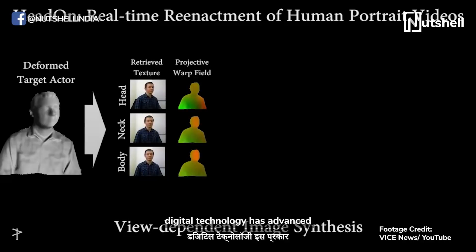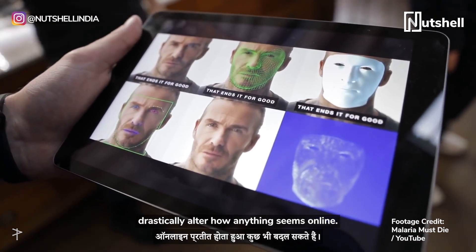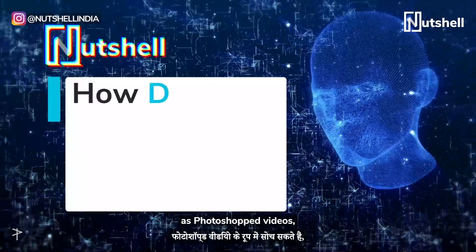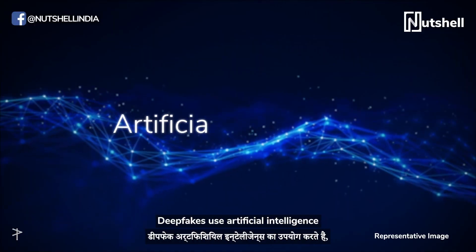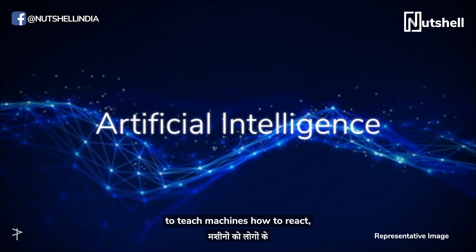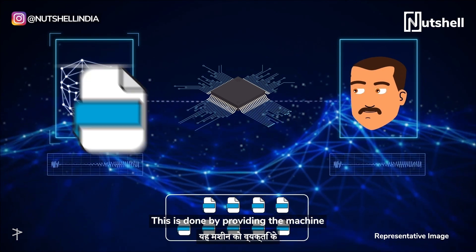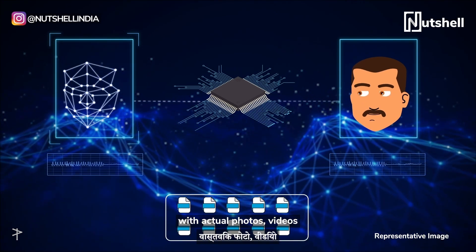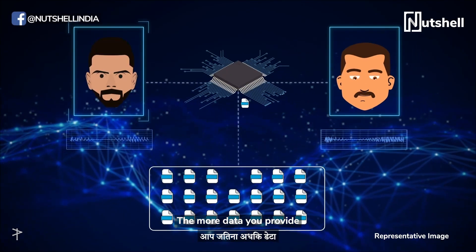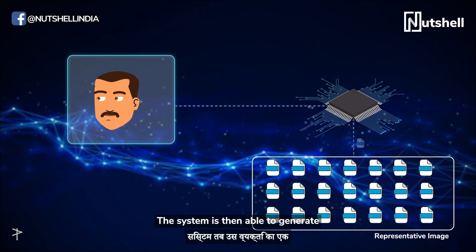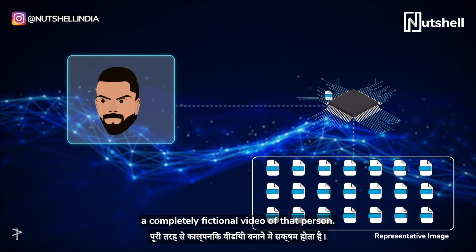In the last few years, digital technology has advanced to the point where we can drastically alter how anything seems online. You can think of deepfakes as Photoshop videos, but there's a lot more to it than that. Deepfakes use artificial intelligence to teach machines how to react, read, and mimic people's facial expressions and voices. This is done by providing the machine with actual photos, videos, and voice samples of the person. The more data you provide the machine with, the better it is able to learn. The system is then able to generate a completely fictional video of that person.